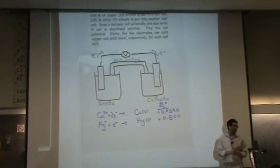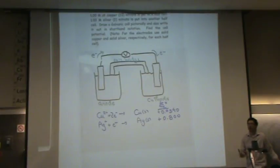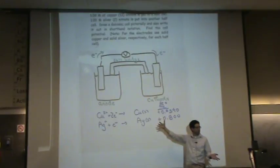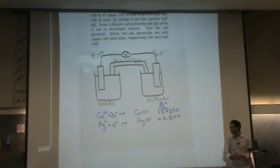What has to happen that I didn't mention before is that the total, the E standard for the cell, the total, has to be a positive number for it to be spontaneous or for this to go forward. And so essentially you have to flip the one that is going to allow you to have a positive answer in the end.